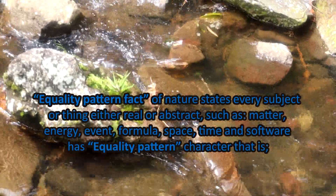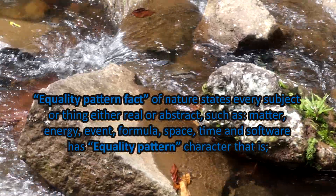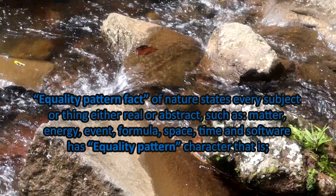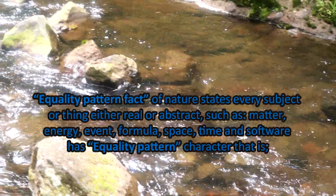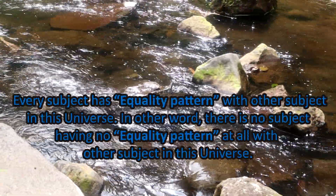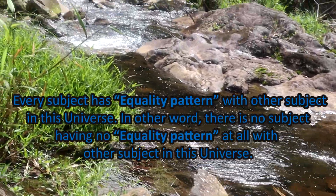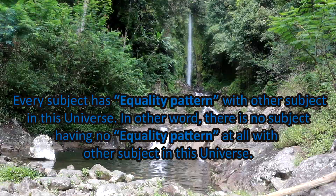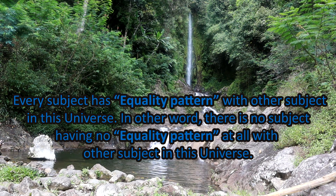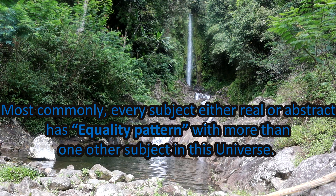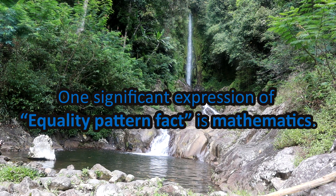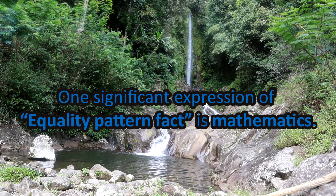Equality pattern fact of nature states that every subject or thing, either real or abstract — such as matter, energy, formulas, space, time, and software — has an equality pattern character. That is, every subject has an equality pattern with other subjects in this universe. In other words, there is no subject having no equality pattern at all with other subjects. Most commonly, every subject has equality pattern with more than one other subject. One significant expression of equality pattern fact is mathematics.